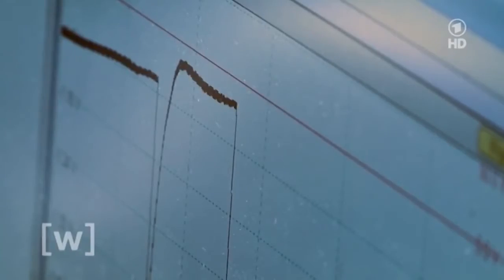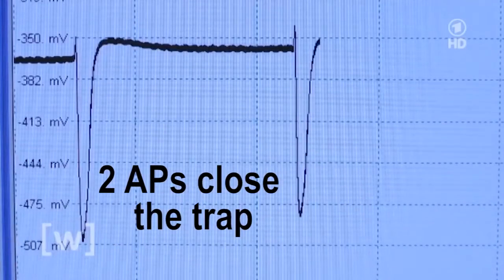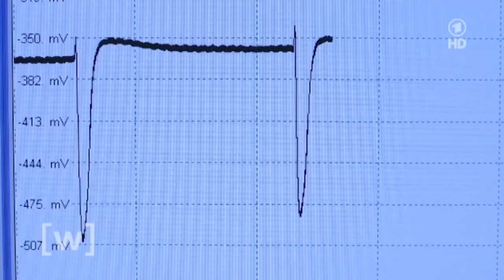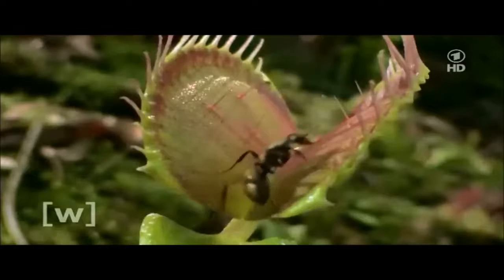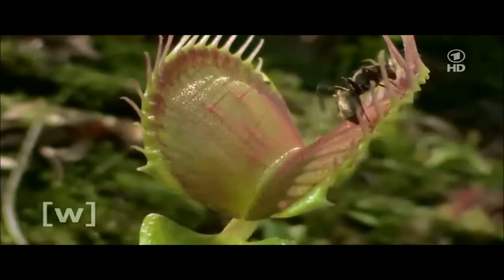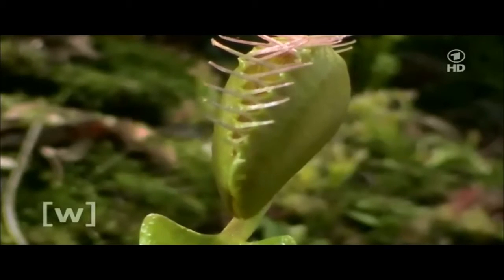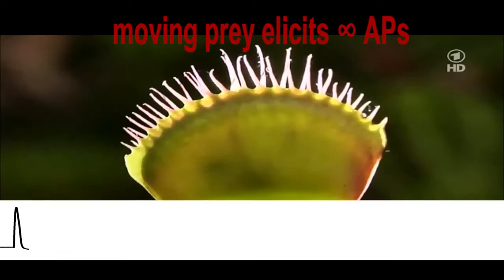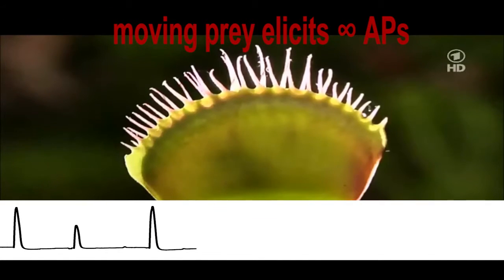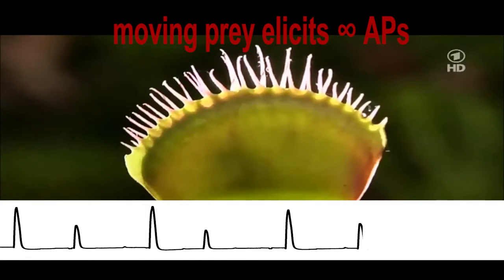Two action potentials are required to close the trap. The trapped insect struggles to escape the green cage, repetitively touching the trigger hairs. Trains of action potentials excite the flytrap, and the panicking insect elicits more than 50 action potentials per hour.